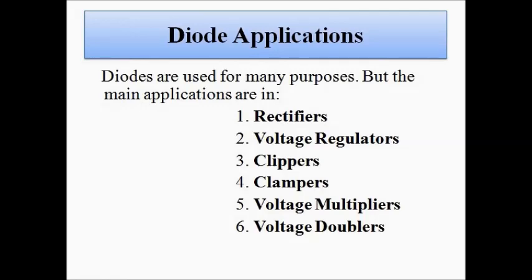The first application is the rectifier. Rectification is the process of conversion of AC supply into DC — a certain level of DC. Then we have voltage regulators, which are used where we require a constant voltage supply — we do not want the voltage supply to fluctuate. Here the concept of the Zener diode will come into play, which we will be discussing in a separate video.